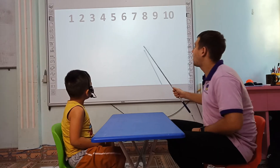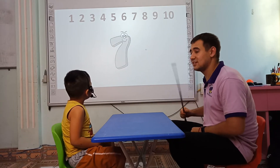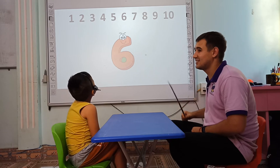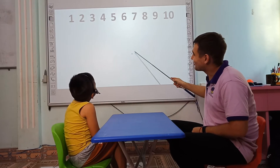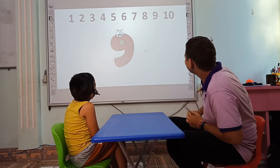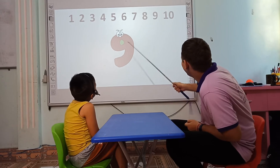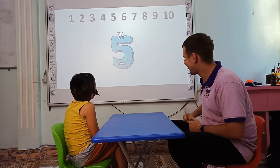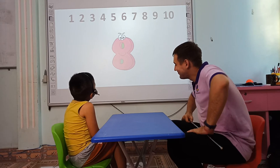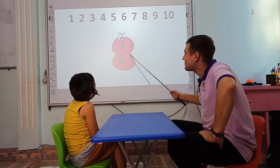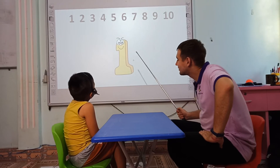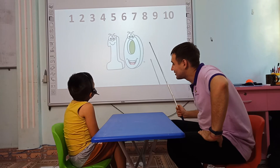What number is this? Number 2. What number is this? Number 7. What number is this? Number 3. What number is this? Number 9. What number is this? Number 5. What number is this? Number 4. Number 1. Number 10.